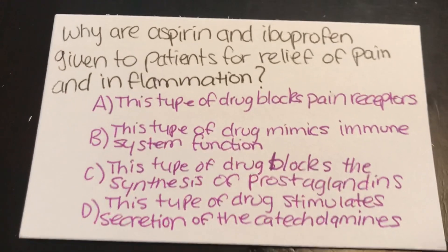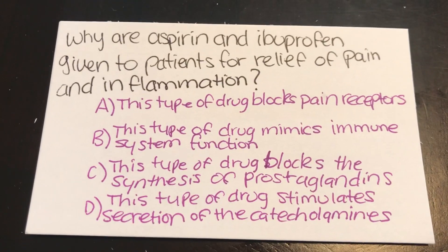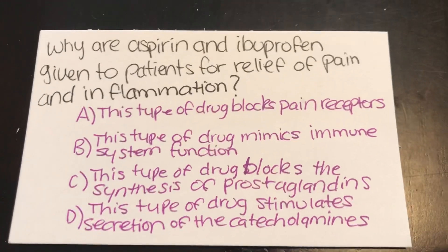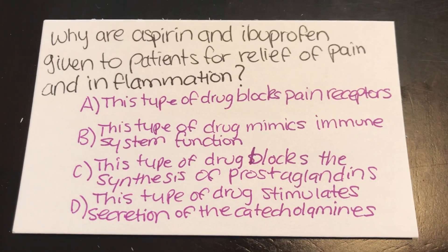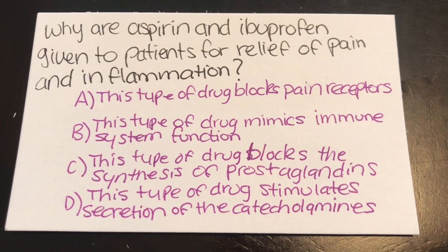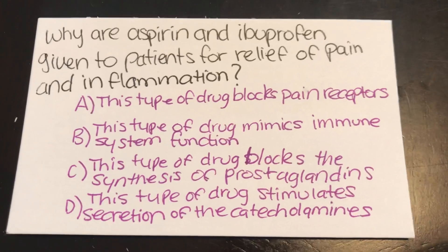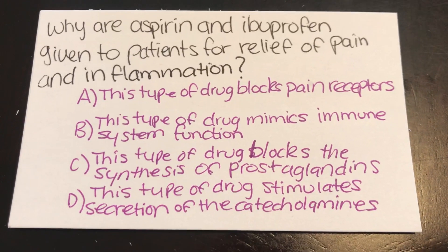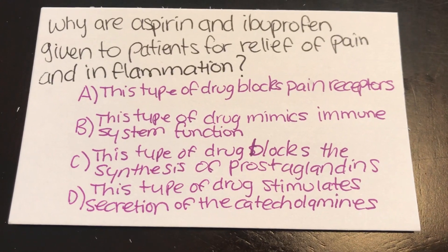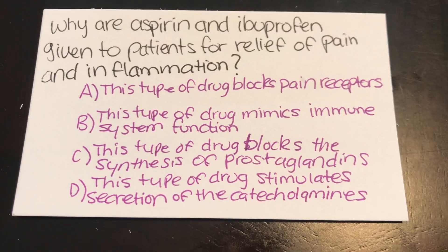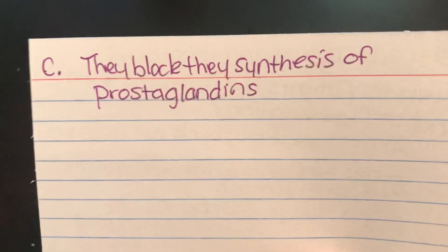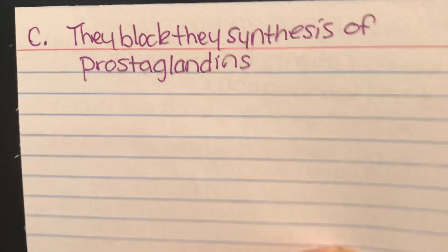Why are aspirin and ibuprofen given to patients for relief of pain and inflammation? A, this type of drug blocks pain receptors. B, this type of drug mimics immune system function. C, this type of drug blocks the synthesis of prostaglandins. Or D, this type of drug stimulates secretion of the catecholamines. Answer: C, they block the synthesis of prostaglandins.